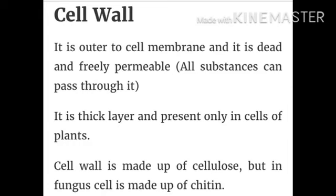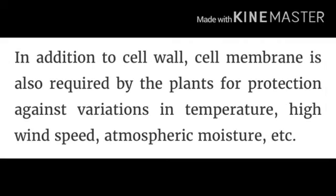Now, the cell wall. This is basically present in plant cells, not in human cells. It is the outer covering to the cell membrane and it is dead and freely permeable — all substances can pass through it. It is a thick layer present only in plant cells. Cell wall is made up of cellulose, but in fungus it is made up of chitin.